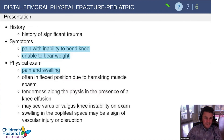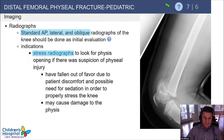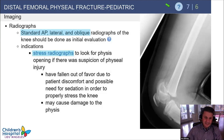Physical examination of these fractures should include a neurovascular exam because of the proximity of the popliteal artery, as well as focal tenderness over the physis. If radiographs are not confirmatory, tenderness over the physis should still maintain suspicion for a physeal injury. The best views are AP, lateral, and oblique. Stress views are no longer indicated in kids because you may cause a physeal injury by stressing the physis.